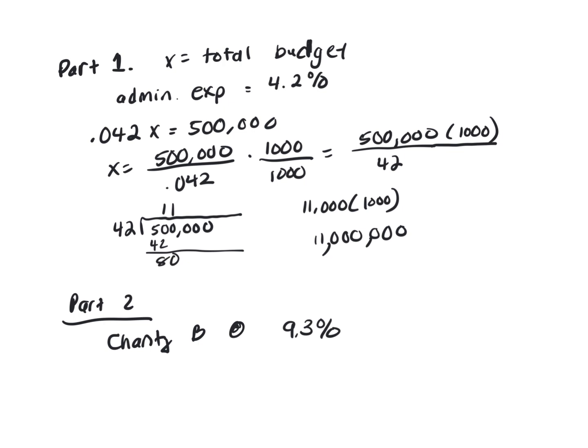It says if Charity C allocated $500,000 to administrative expenses, then its total budget was what? I'm going to let X be the total budget.